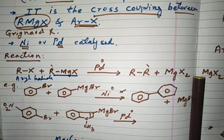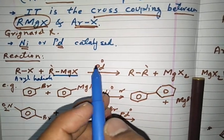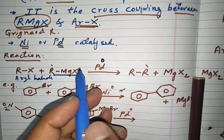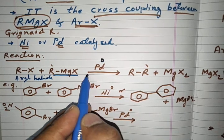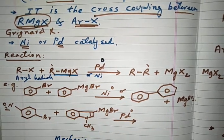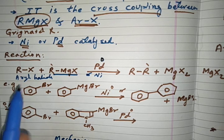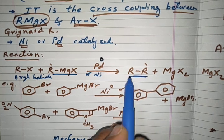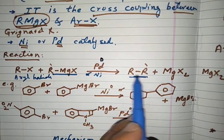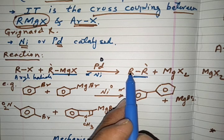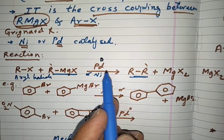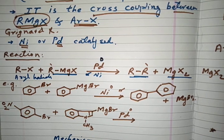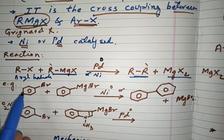The catalyst shown here is palladium in the zero oxidation state — Pd(0), the pure metal. We can also use nickel catalyst. There is a coupling between the two R groups, forming the R-R carbon-carbon bond. This can be aryl-aryl, or aryl-alkyne, and vice versa. The side product formed is MgX₂.